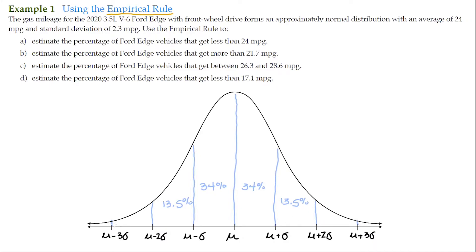If 99.7% goes from here all the way over to here, then I have to add another 4.7% to my 95%. Half of that goes on each side — that's 2.35% per side. It's just a matter of addition and subtraction along the area under the curve.